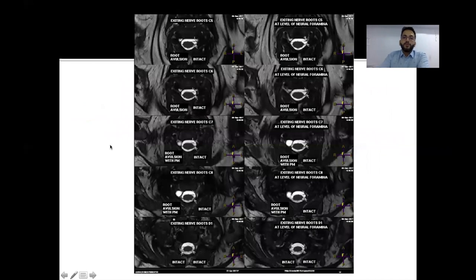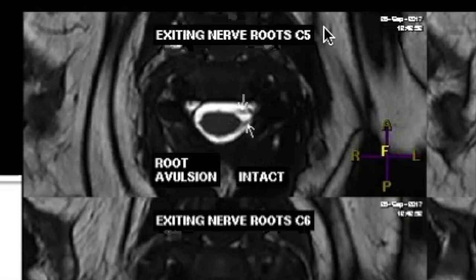So this is a patient who has got nerve root avulsions involving right-sided C5 to C8 nerves. So we have taken axial 3D SPACE or a FIESTA sequence here. So this is at the level of C5 nerve root. We can see that the ventral and dorsal rootlets are seen on the left side but they are not seen on the right side.